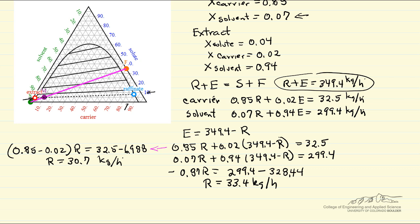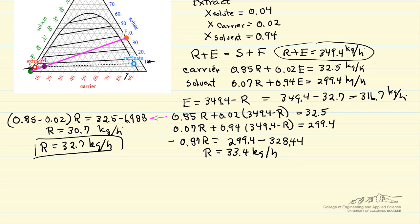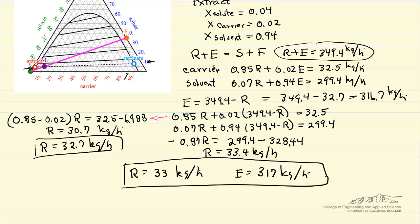So we get a slightly different number, and we're just going to take the average of these two values. So the average value then, for R, is 32.7 kilograms per hour, and then E is 349.4 minus 32.7, and so E is equal to 316.7 kilograms per hour. And considering the significant figures that we used in the calculations, and particularly reading the values, then we would say R is 33 kilograms per hour, and E is 317 kilograms per hour. So these are the final flow rates leaving the single-stage extraction unit.